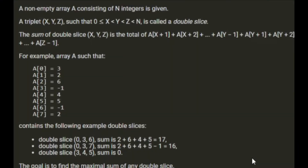A non-empty array A consisting of n integers is given. A triplet (x, y, z) such that 0 is less than or equal to x, which is less than y, which is less than z, which is less than n, is called a double slice. The sum of a double slice (x, y, z) is the total of A[x+1] to A[x+2] to A[y-1], plus A[y+1] to A[y+2] to A[z-1].